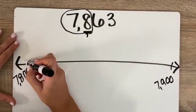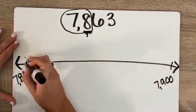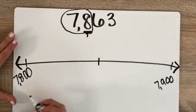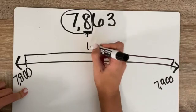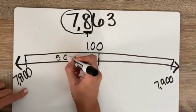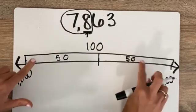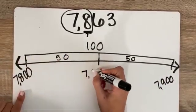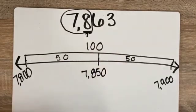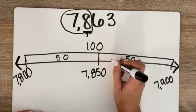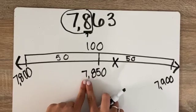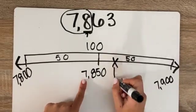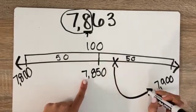Now I find the midpoint. Because the difference of these two numbers is 100, halfway would be 50 because 50 plus 50 is 100. So halfway would be 7,850. Now I look at my whole number, which is 7,863. That would be somewhere over here, because 7,863 is greater than 7,850. So I would round up to 7,900.